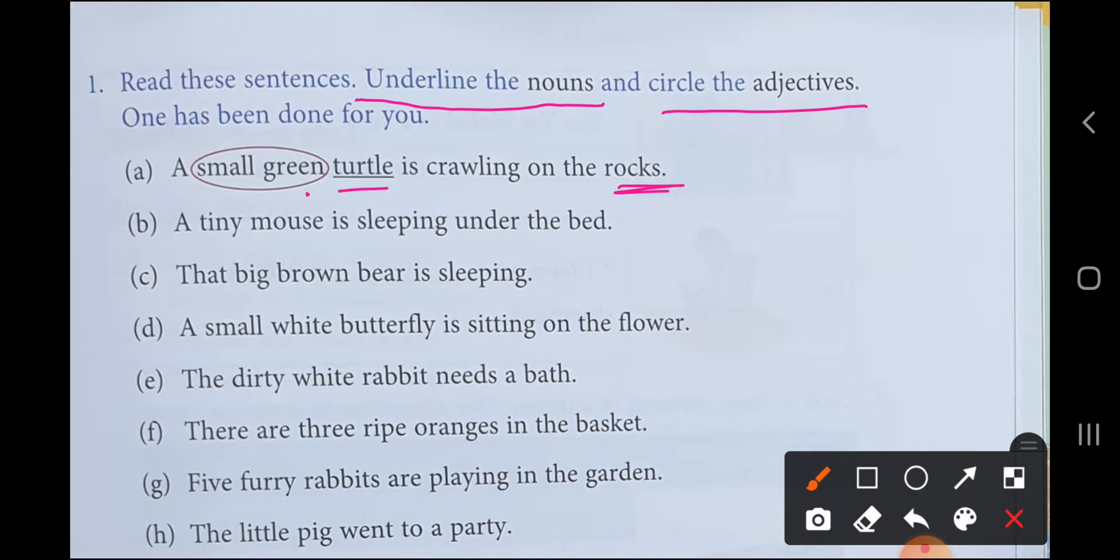A tiny mouse is sleeping under the bed. Mouse is an animal, so this is noun, we will underline it. How is the mouse? Tiny, small mouse, so we will circle it. Is sleeping under the bed. Bed is also name of thing, so this is noun.